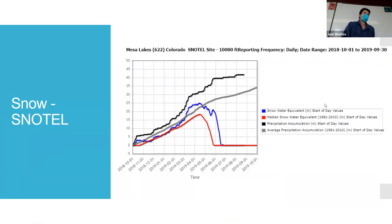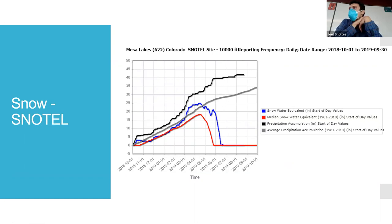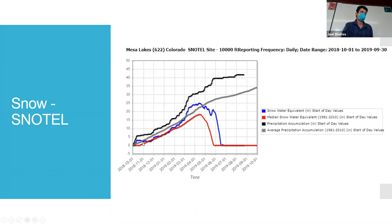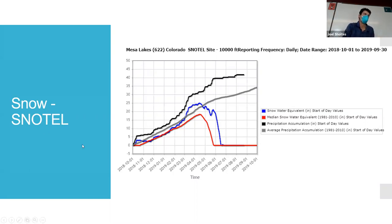Here's SNOTEL data from Mesa Lakes, the site on the Grand Mesa at about 10,000 feet. It shows the water year — which starts October 1st. The idea is that after October 1st, it starts snowing again, so we reset. The mountains go from summer to fall and winter, you get your snow, and we start accumulating. That's why we start on October 1st — it's seasonally based.